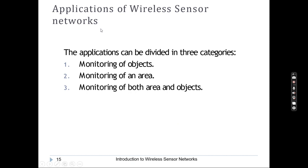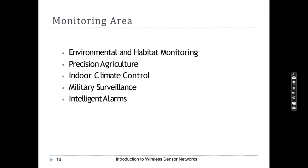Based on application, wireless sensor network applications can be classified into three types: monitoring of objects, monitoring of an area, and monitoring of both area and objects. In the monitoring area category, environmental and habitat monitoring are included — for example, animal habitat monitoring gives the idea about the animal's lifestyle, why things go wrong, and why they come close to human settlements.